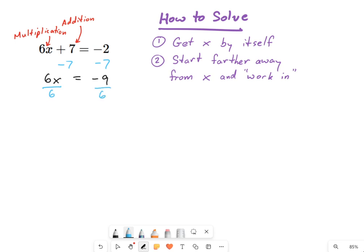So I'm going to divide both sides by 6. And those cross out on the left, that gives me x equals negative 9 over 6.